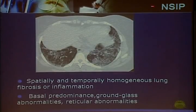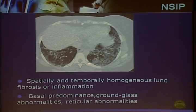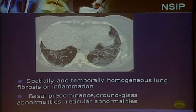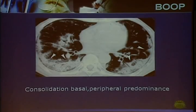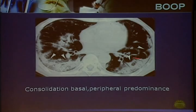Non-specific interstitial pneumonia (NSIP) has a much better response to corticosteroid treatment. On CT scanning it shows spatially and temporally homogeneous lung fibrosis or inflammation, mainly affecting the basal part, with ground glass or reticular abnormalities. Organizing pneumonia has the best response to corticosteroid treatment, and on CT shows consolidation in the basal and peripheral parts of the lungs.